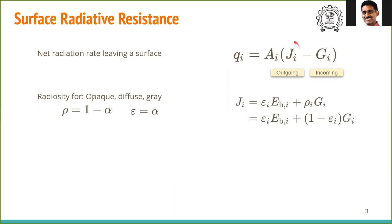Now let us write expressions for ji and gi. For ji, since this is a real surface, the emissive flux is epsilon_i times Eb_i. Note that there can be n surfaces, each with a different emissivity and each at a different temperature — hence Eb_i. Then there is the reflective power, which is reflectivity times the irradiation gi. This gives us the total outgoing flux from emissions plus reflection.